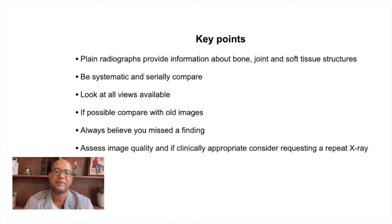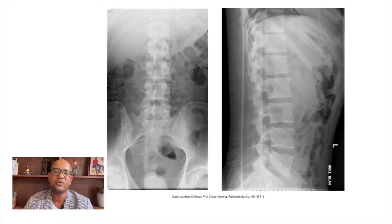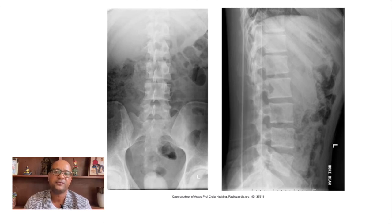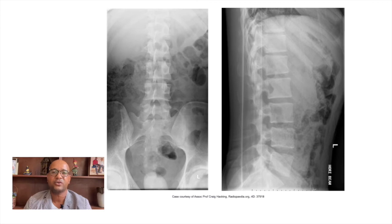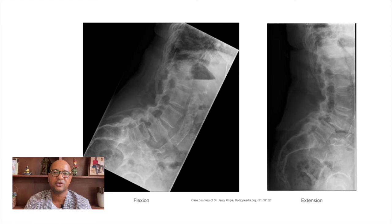The lumbar spine series is comprised of two standard projections along with a range of additional projections depending on clinical indications. Standard projections are the PA or AP view and the lateral view, with others including oblique views and functional views. Our main focus today is the AP and lateral views, which are the most commonly used everywhere.